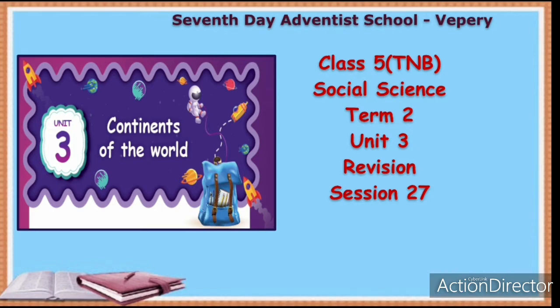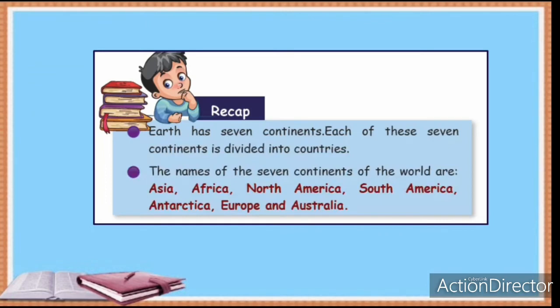Okay children, now we shall start with Unit 3 revision. Before that, we shall recall what all we studied in this lesson. We studied about the 7 continents in detail. The 7 continents are: Asia, Africa, North America, South America, Antarctica, Europe, and Australia.